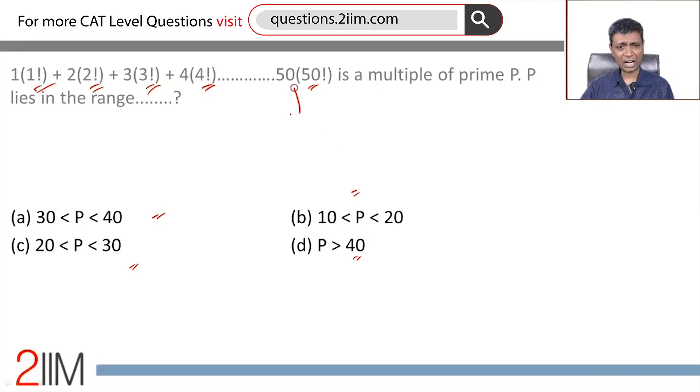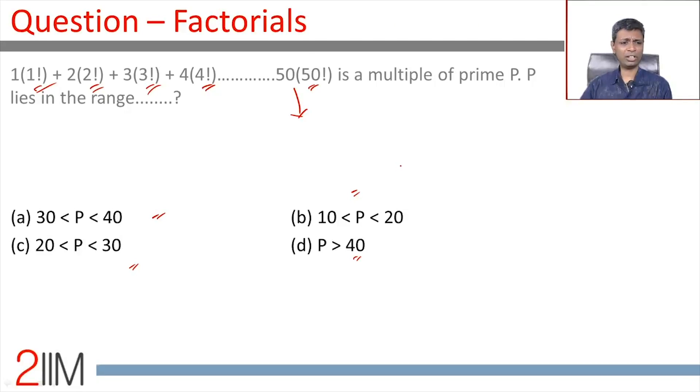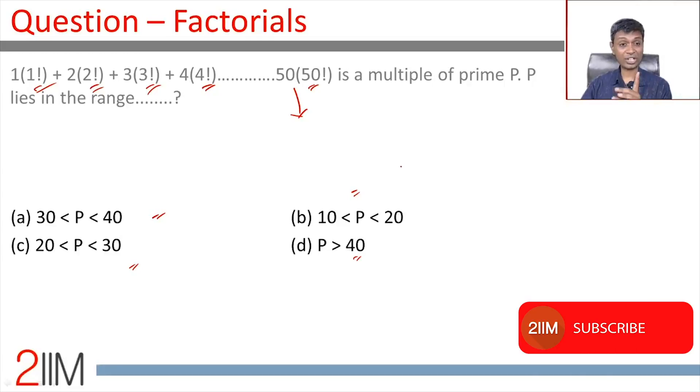We're talking about a very large number, 50 times 50 factorial, it's obscenely high. It's a multiple of prime p. We don't need to find p, p lies in some range, we need to find which of these answers satisfies. It's a dicey question to approach. We don't even know what the starting step is.